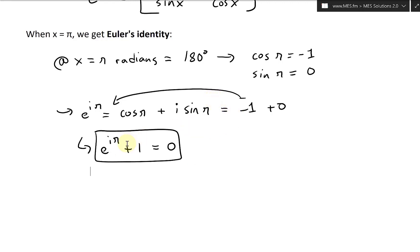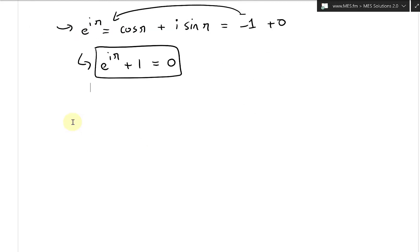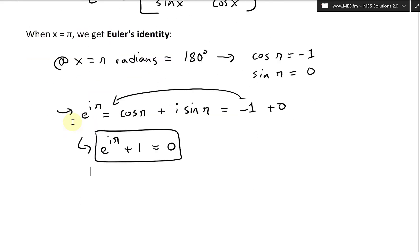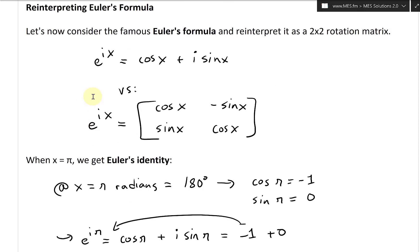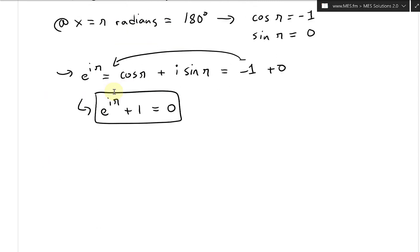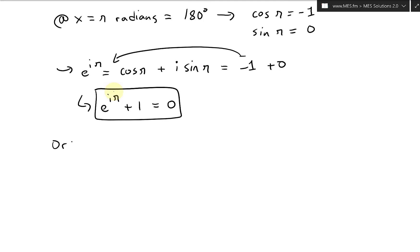So that's what we have: e to the i pi plus one equals zero. It looks elegant, but I think the 2 by 2 matrix form is more telling. So let's write it in the rotation matrix format.